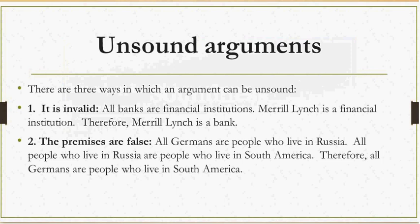Here's an example: All Germans are people who live in Russia. All people who live in Russia are people who live in South America. Therefore, all Germans are people who live in South America. This argument is valid — if we put Germans inside Russia and Russia inside South America, the conclusion does follow. But we know the premises are false: it is not true that Germans are people who live in Russia, and it is not true that people who live in Russia live in South America. So that's why this argument is unsound — even though it is valid, the premises are false.